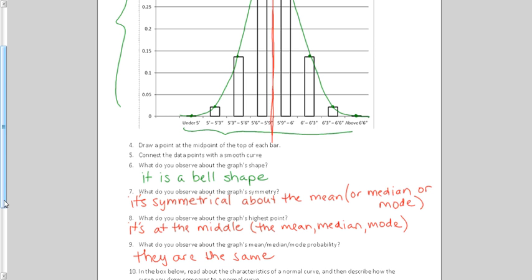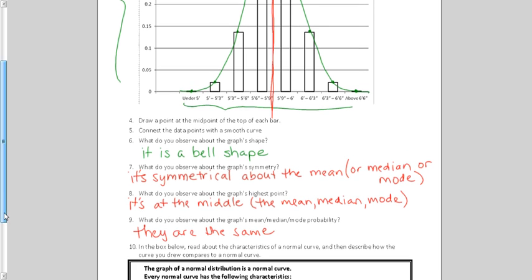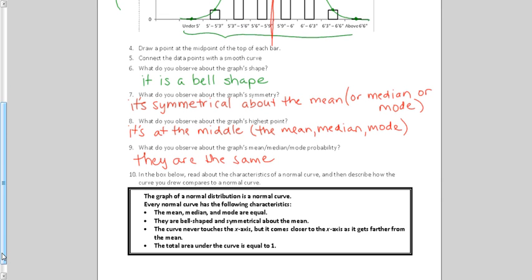And last, it says in the box below, read the characteristics of a normal curve, and then describe how the curve you drew compares to the normal curve. Well, in order to be a normal curve, they're all going to look like this. They are all going to be nice bell shapes. So, let's just read these in order. It says, every bell curve, the mean, the median, and the mode are equal, just like they were in mine. They are all bell-shaped, and they are symmetrical about the mean.